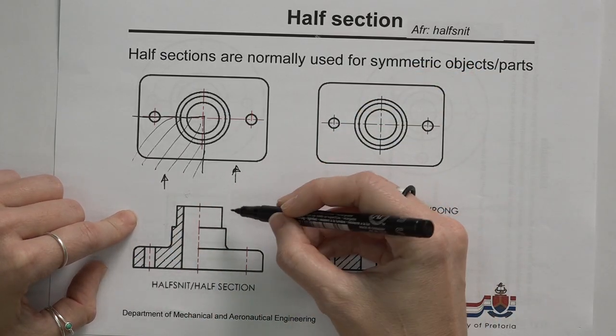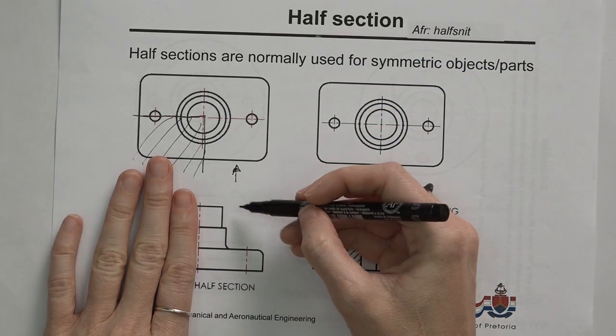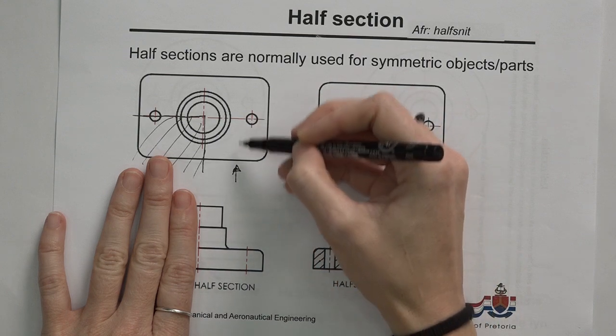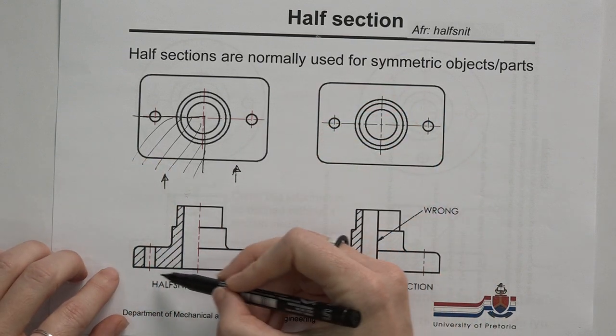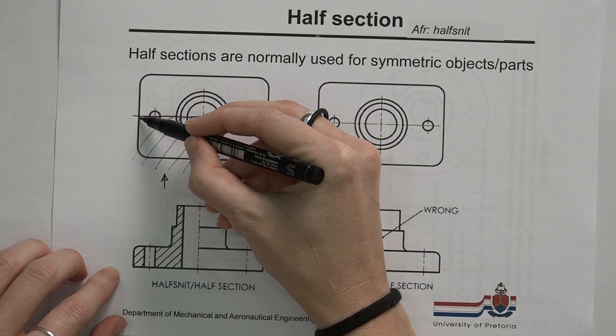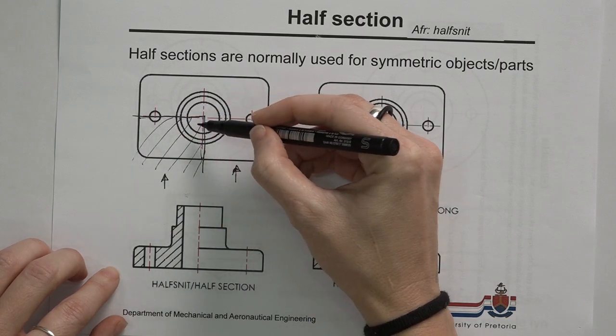So this is what you can see here. This side is only showing the outside of that component, and this part is only showing what it would look like if I cut that completely away and I look at what is there.